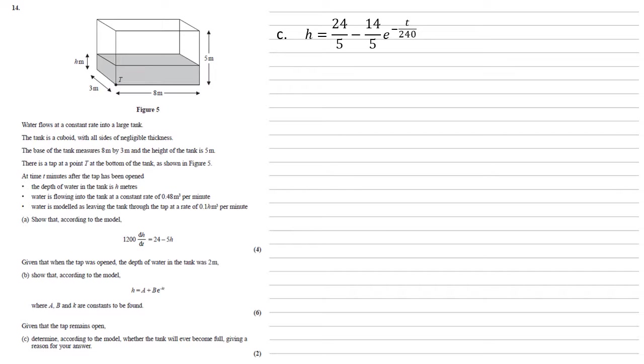As we're trying to work out if a tank will ever become full, we're trying to think of what happens as time progresses, so as t gets larger and larger and larger. So as t tends towards infinity, e to the minus t over 240 must tend towards zero because its power is getting more and more negative. If that tends towards zero, then h must just tend towards the 24 over 5 from its first term, which is equal to 4.8. But the height of the tank is 5, and 4.8 is smaller than 5, so therefore, no, the tank will never become full.